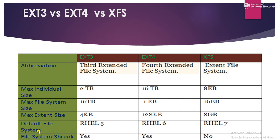Now we will talk about the default file systems. ext3 is the default file system of RHEL 5 — when you create a file system without defining any file system type, it will default to ext3 in RHEL 5. In RHEL 6, the default file system is ext4, and in RHEL 7 the default is xfs.